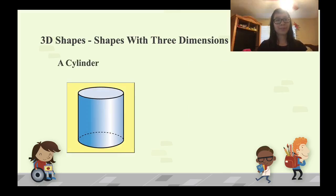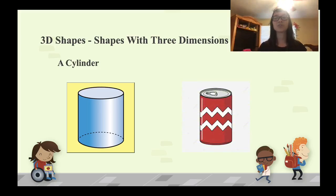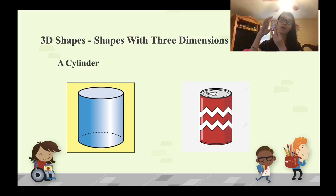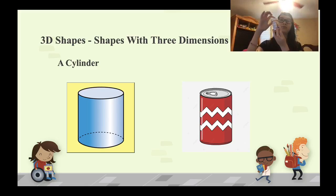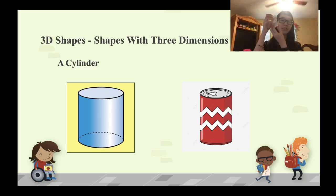The last shape we learn is a cylinder. We see it a lot every day. It looks like a can, or like a medicine can. How do we identify a cylinder? It has two bases, and they are two circular bases. So we call it a cylinder.